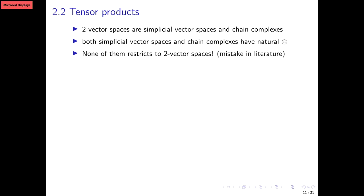What I can tell you about tensor products of two-vector spaces is that they don't work very well. Two-vector spaces are simplicial vector spaces and chain complexes — I can see it either way — but both categories have natural tensor products that do not restrict to two-vector spaces. This is a mistake in the literature that goes back to Baez and Crans's original paper, where they have wrong formulas in this context. I think their viewpoint and the work they did there is great, and most of what we are doing is based on their contribution, but in this very particular issue there was a problem.